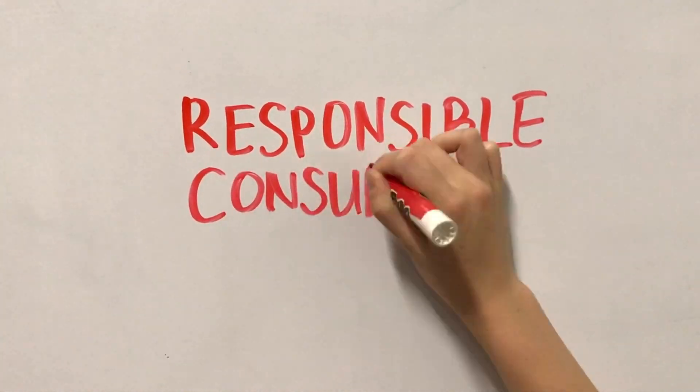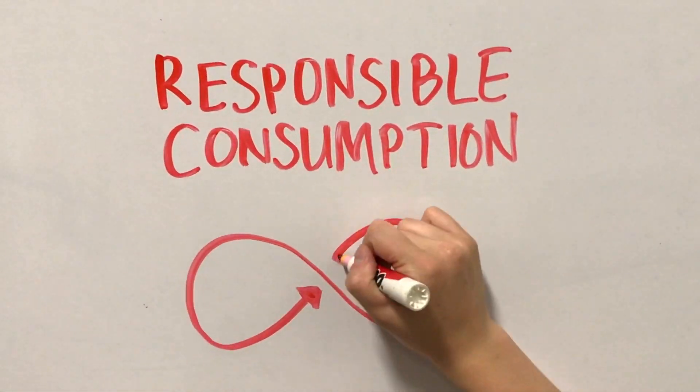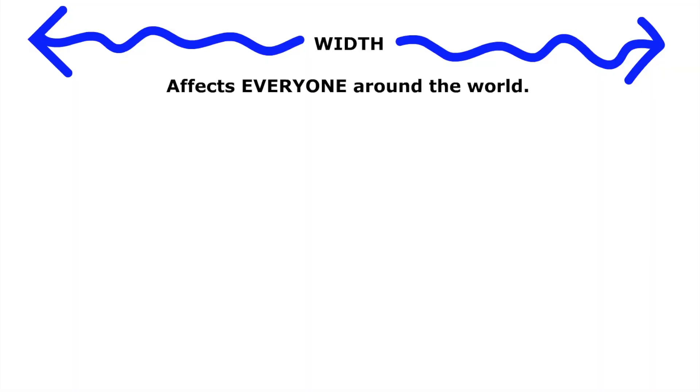This problem comes under the UN global issue of responsible consumption. It affects everyone globally because everyone uses water in their everyday lives, and if we do not conserve water, then eventually an adequate healthy water supply may not be available.